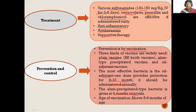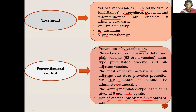The optimum age for vaccination is above 5 to 6 months of age. By adopting such preventive measures, we can prevent the disease. By treating cases in early stages, we can cure the animals; otherwise, the disease is highly fatal and may lead to death. Thank you.